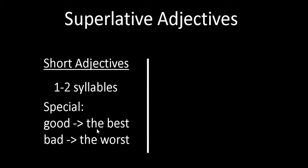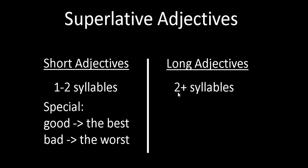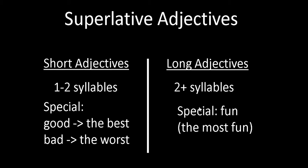There is a special rule for 'good' and 'bad': good changes to 'the best' and bad changes to 'the worst'. For example: I think pizza is the best food. I think broccoli is the worst food. For long adjectives, they have two or more syllables. There is also a special rule for 'fun' — we say 'the most fun' even though 'fun' has only one syllable; we count it as a long adjective.